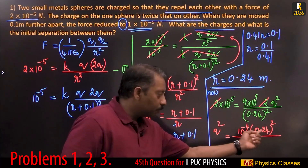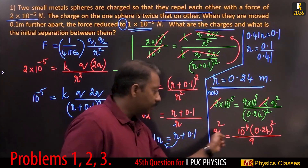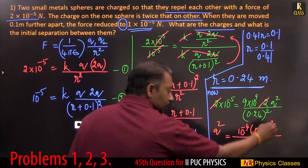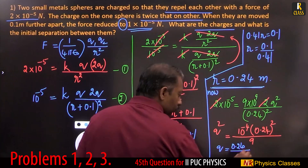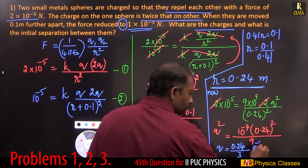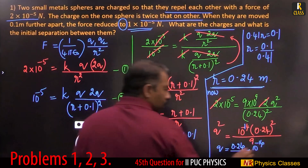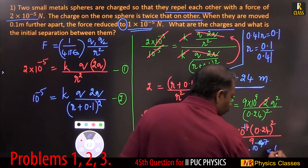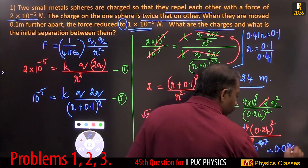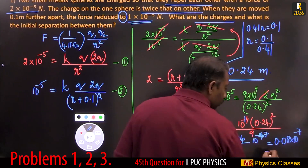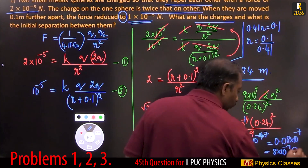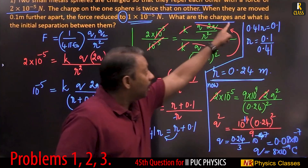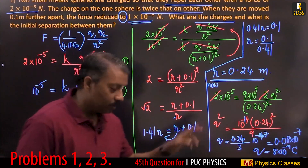Simplify — do not calculate 0.24² separately since it's q²; just take the square root. q = 0.24 / 3 × 10⁻⁷ = 0.08 × 10⁻⁷ = 8×10⁻⁹ Coulomb. This is q. Since the two charges are q and 2q, the charges are 8×10⁻⁹ C and 16×10⁻⁹ C.